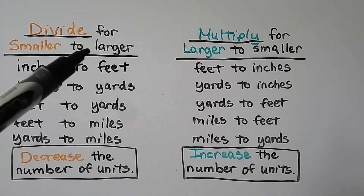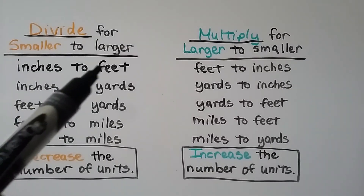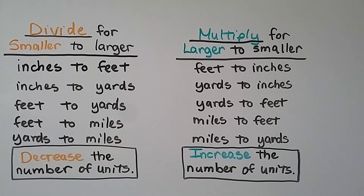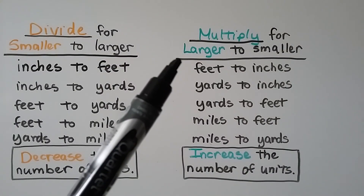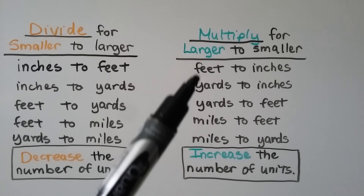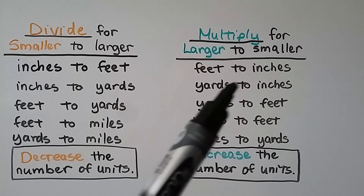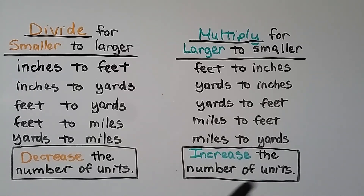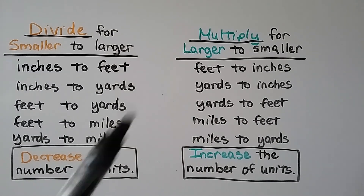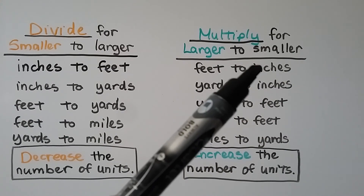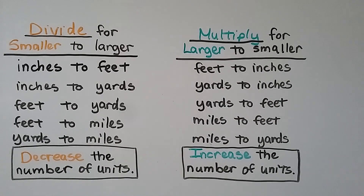When going from smaller to larger units, we divide — inches to feet, inches to yards, feet to yards, feet to miles, yards to miles. We decrease the number of units. When going from larger units to smaller units, we multiply — feet to inches, yards to inches, yards to feet, miles to feet, miles to yards. We increase the number of units. For example, one foot gives you 12 inches, so you have more units.